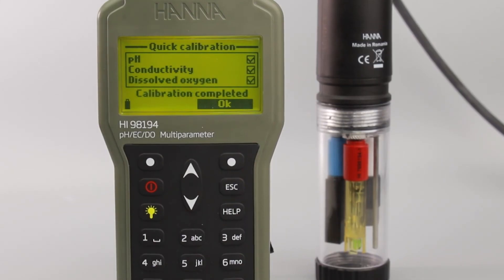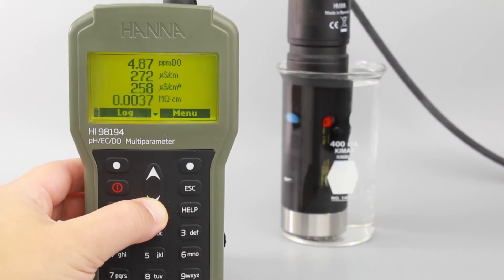Once your meter is calibrated, you're now ready to begin taking measurements. Submerge the clean probe into the sample you'd like to measure, pressing the buttons to navigate between your measurements.